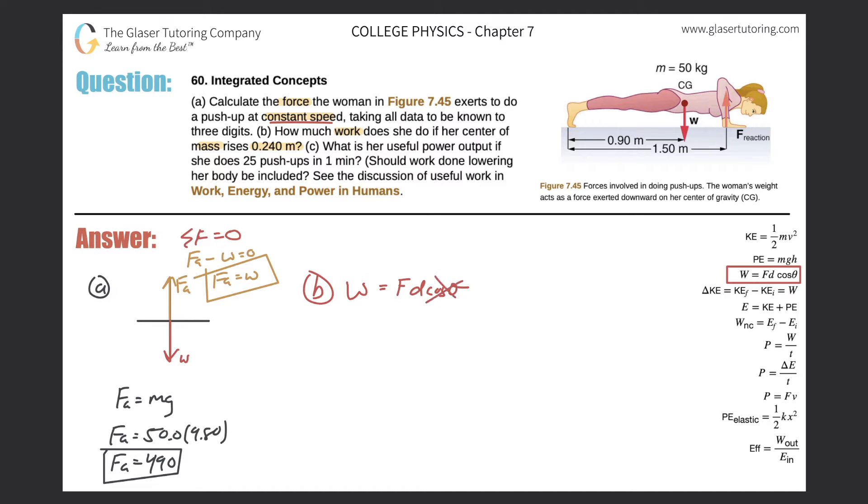Okay, so then the work will be equal to the force she applied, which we just found was going to be 490, multiplied by that distance of 0.240. So the work here is going to be 490 times 0.24, and we get 117.6. But I got to round to three sig figs, so 118 joules.